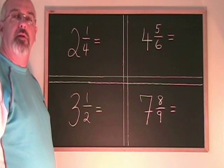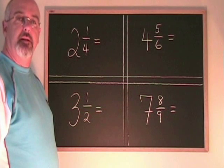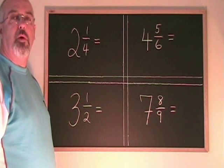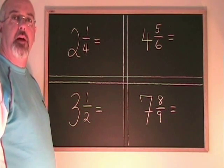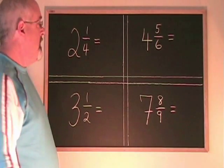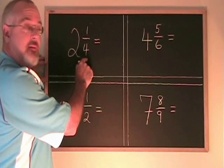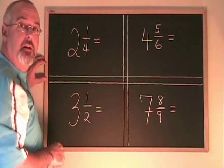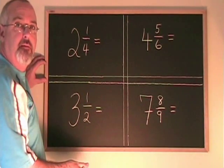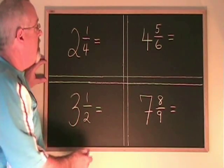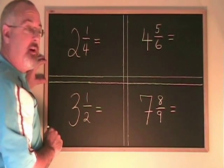Converting mixed numbers to improper fractions is a skill that is very useful when working with fractions. The rule is simple: the big number times the denominator plus the numerator gives the new numerator. The new denominator is the same as the old one. Let's try it.